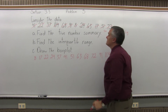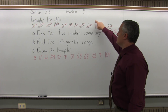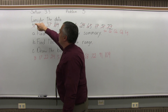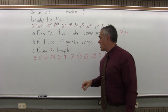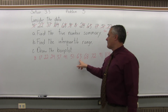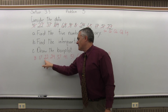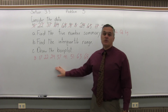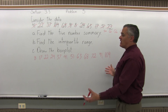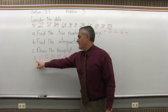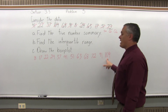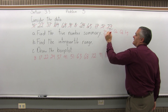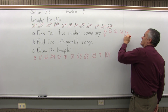Let me just make sure I didn't miss any. Counting up: 1, 2, 3, 4, 5, 6, 7, 8, 9, 10, 11, 12 numbers in the problem. And I have 12 in my ranked list — that's good. Now, the smallest and the largest data values are very easy to find. 8 is the smallest, and 104 is the biggest. So, in terms of my five-number summary, smallest data value is 8, largest data value is 104.